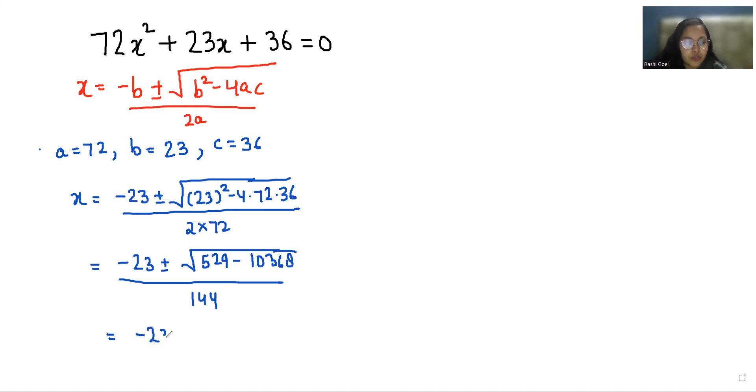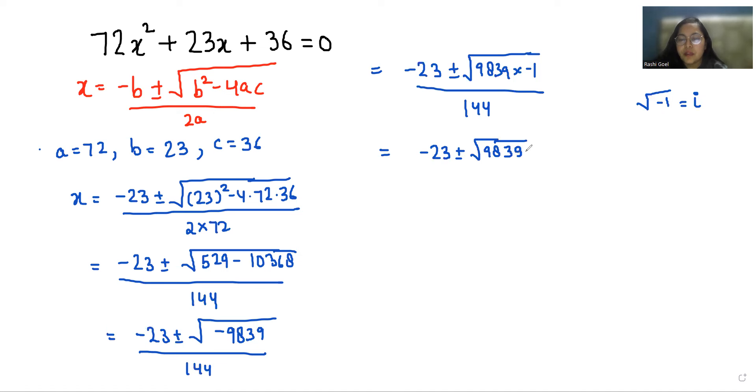Now negative 23 plus minus under root, when we subtract this we get negative 9839 by 144. So negative 23 plus minus under root 9839 times negative 1 by 144. And we know that square root of negative 1 equals iota, so we can write it as negative 23 plus minus under root 9839 iota by 144.